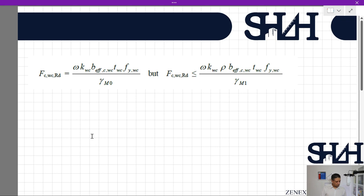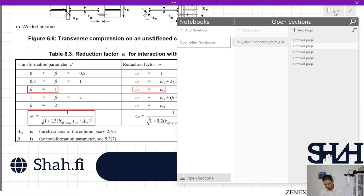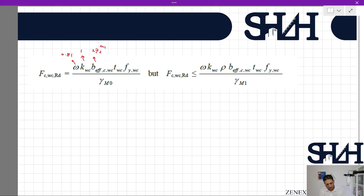Now we can calculate our compressive capacity: ω = 0.81, kwc = 1, beff = 272 mm, tw = 11 mm, fy = 355 MPa, γM0 = 1 gives 860 kN. With ρ = 0.91, the second equation gives 783 kN. Obviously, the second equation is the minimum, so Fc,wc,rd = 783 kN. That's the end of this video.